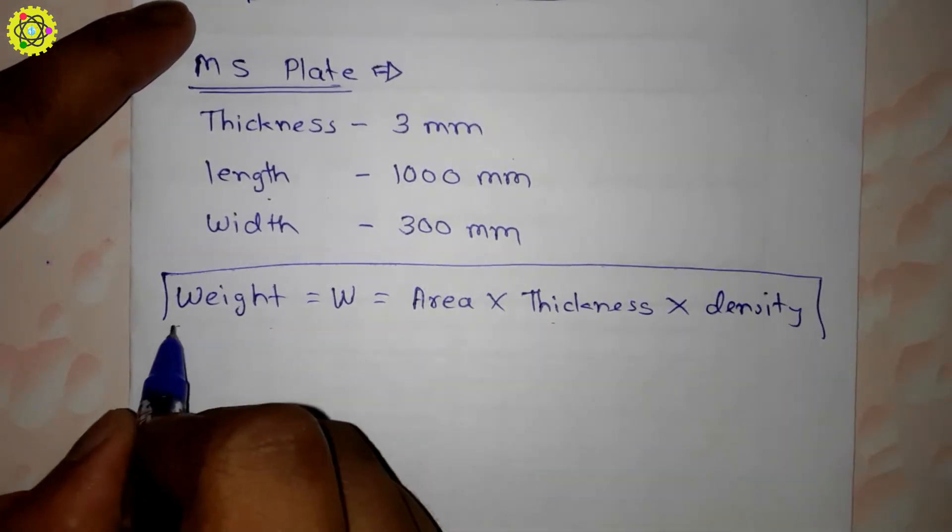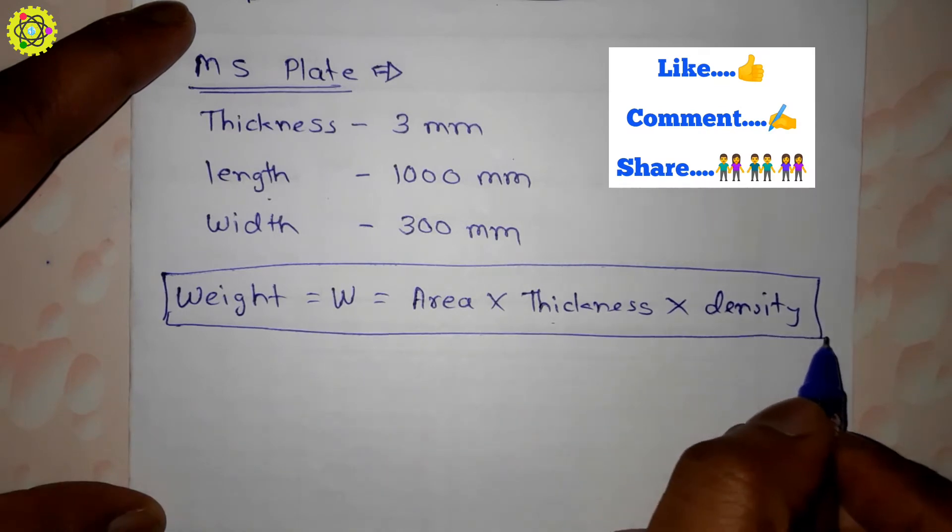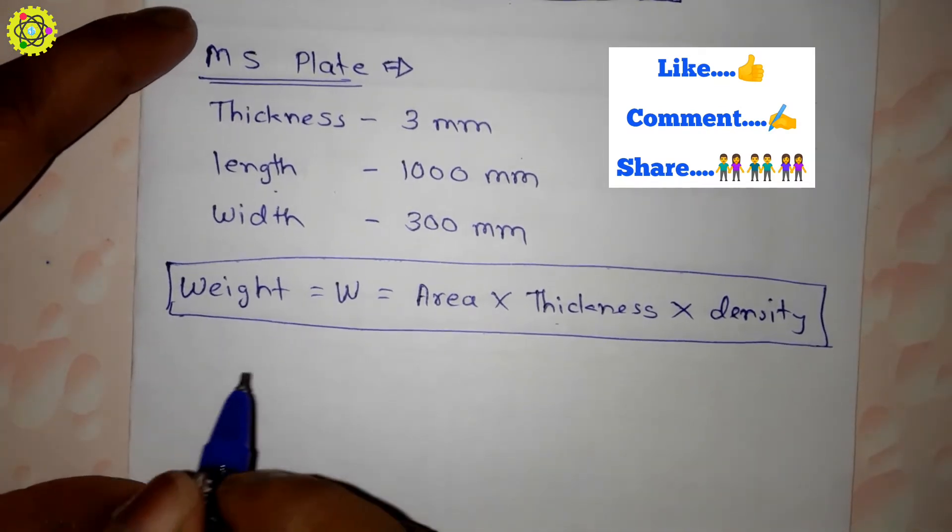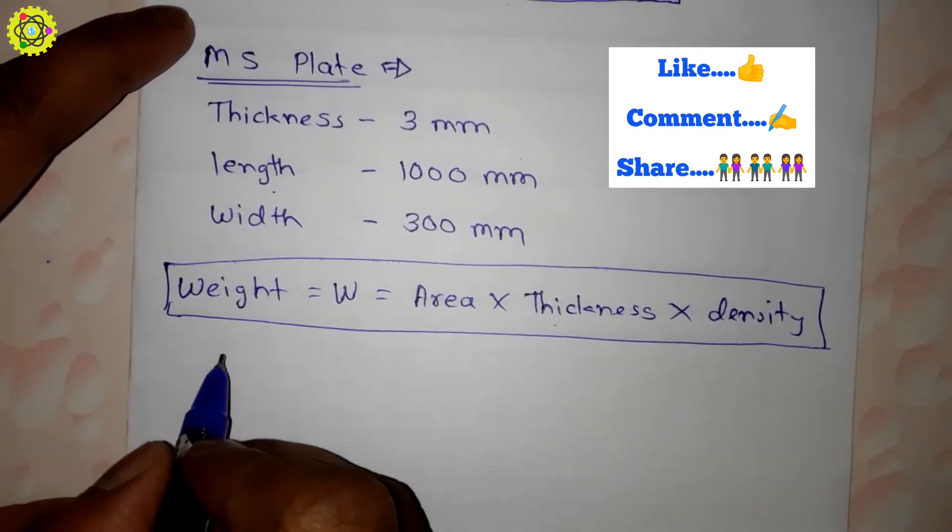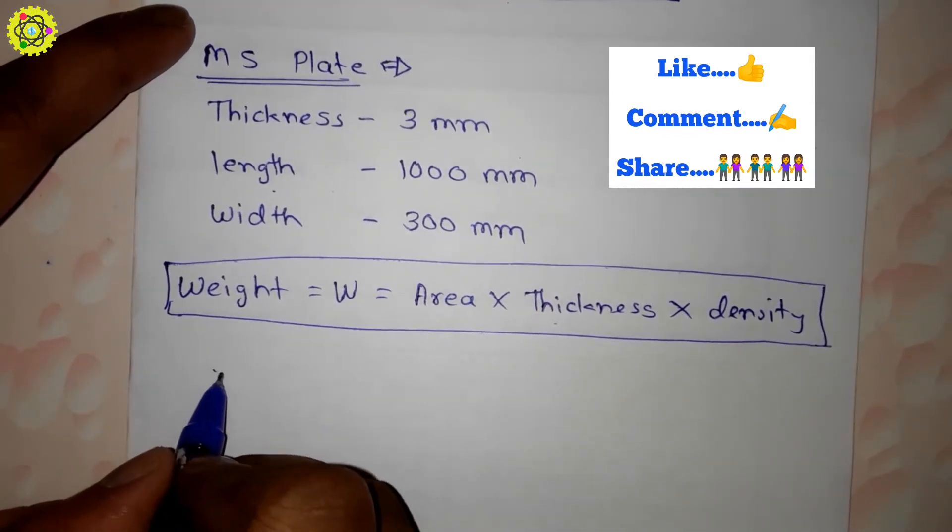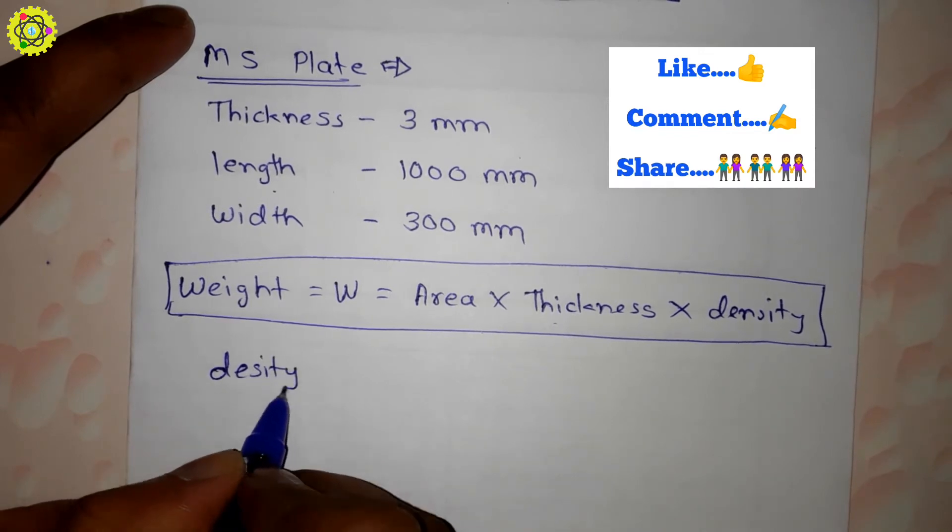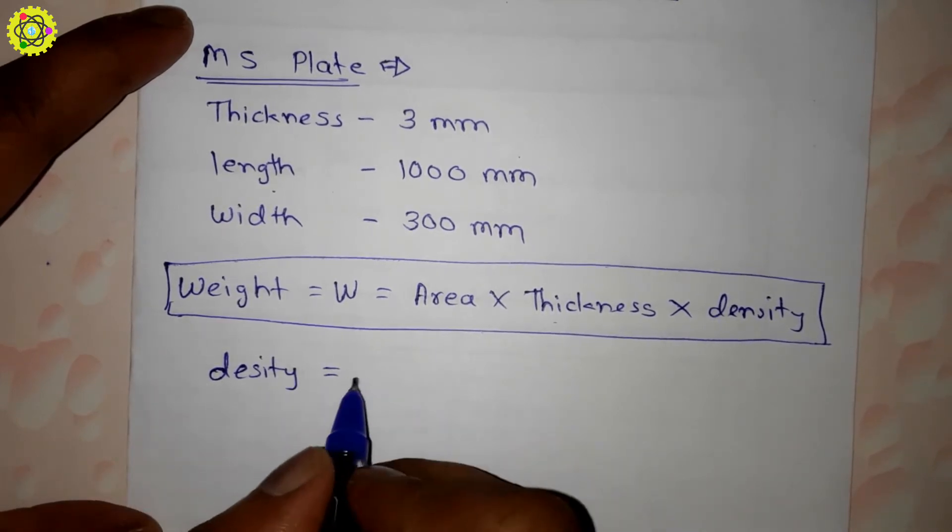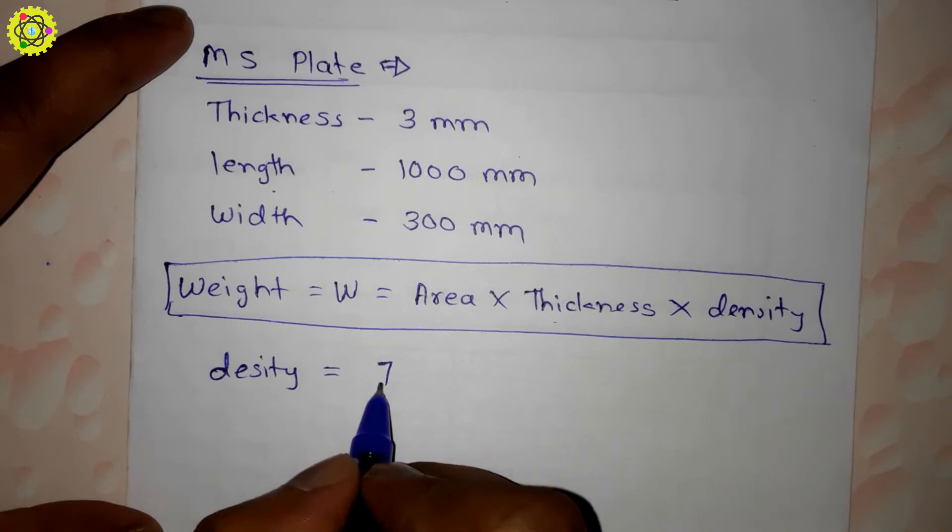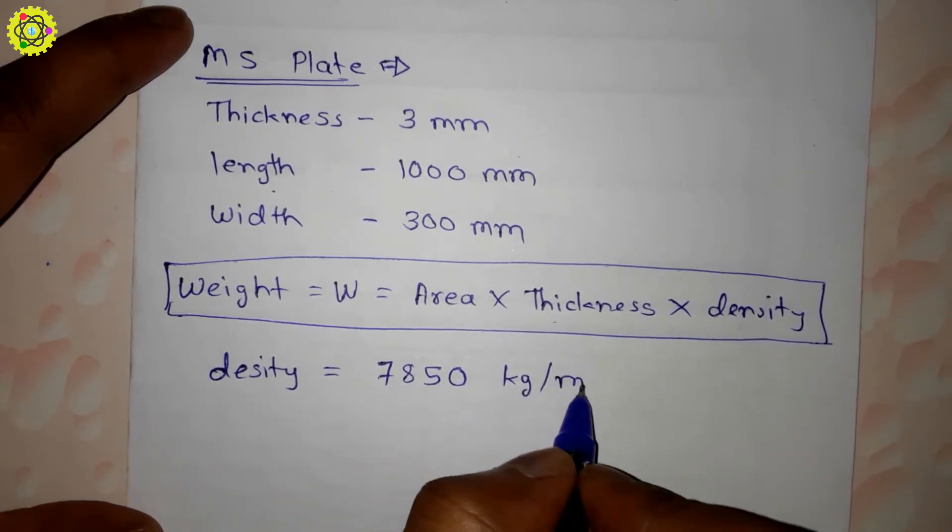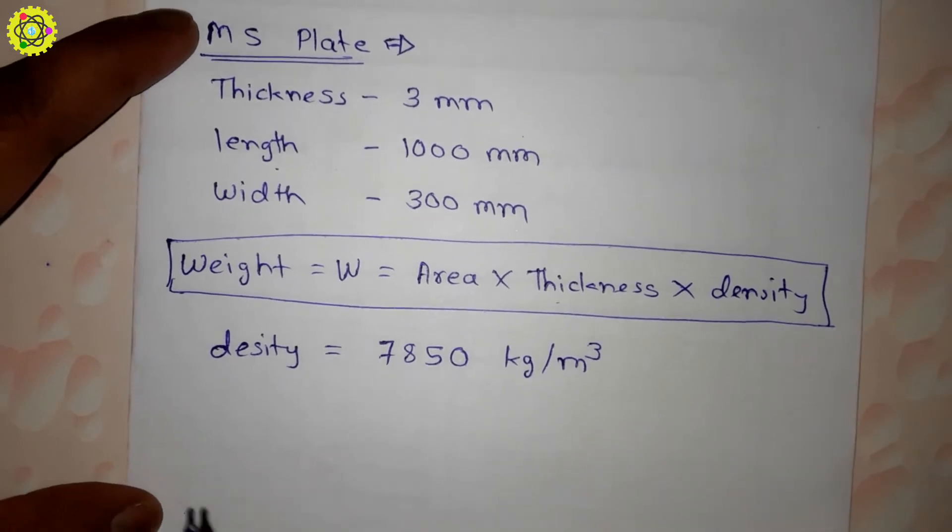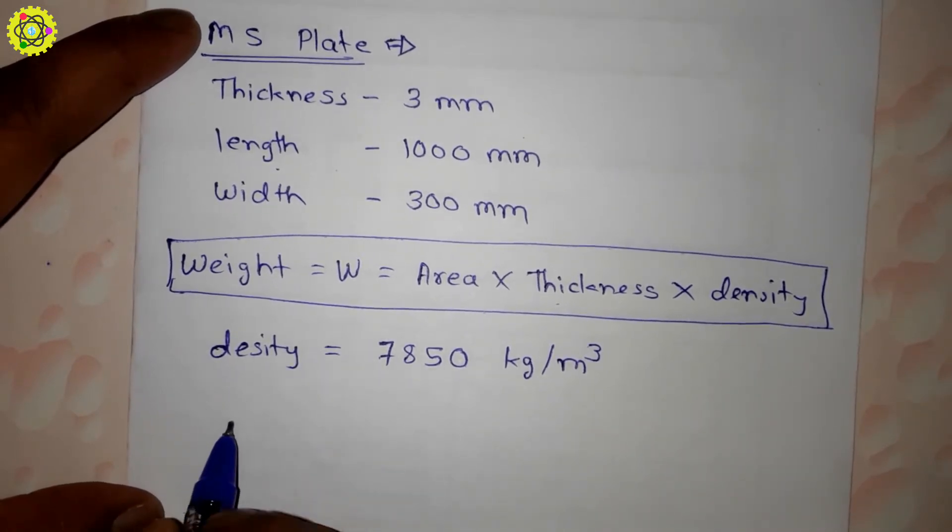For MS plate, we need the density of mild steel. The density of mild steel is 7850 kg per meter cube. Now we will put the values in our weight formula.